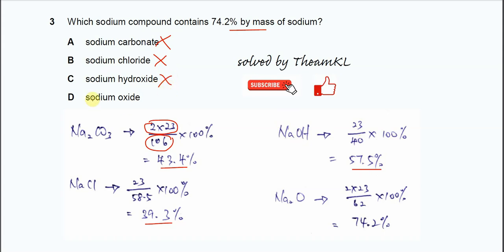The answer is D, sodium oxide. Sodium oxide is Na₂O. So it's 2 times 23 over 62, times 100%, and you get 74.2%. So the answer is D.